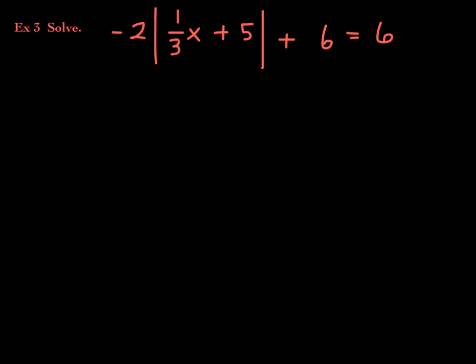Next example: negative 2 times the absolute value of 1/3 x plus 5, plus 6, equals 6. Be very careful — never distribute inside absolute value bars, so do not distribute the negative 2. Also, you cannot combine the negative 2 and 6 because they are not like terms; the negative 2 is being multiplied by a variable expression, not standing alone as a constant.